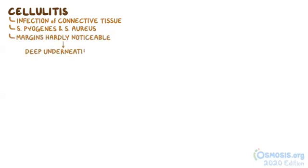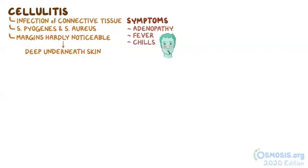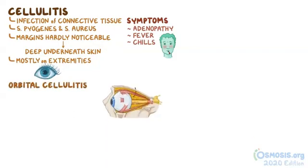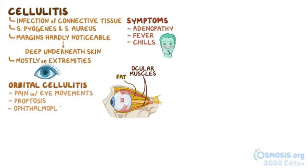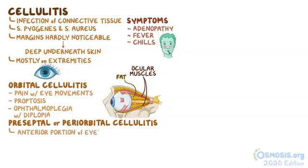Third is cellulitis, which is an infection of the connective tissue, and it's usually caused by S. pyogenes and S. aureus. In cellulitis, the margins are hardly noticeable because the process is deep underneath the skin. Adenopathy and symptoms like fever and chills are common. Although cellulitis occurs mostly on the extremities, it's particularly worrisome when it affects the eyes. Orbital cellulitis involves the contents of the orbit, mostly the fat and ocular muscles, and it causes pain with eye movements, proptosis, and in some cases ophthalmoplegia with diplopia. Preseptal or periorbital cellulitis affects the anterior portion of the eyelid without involving the eye, and it tends to be milder.